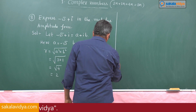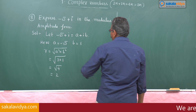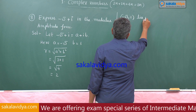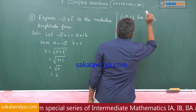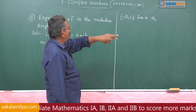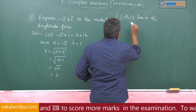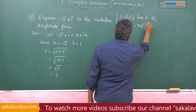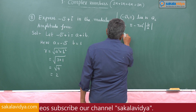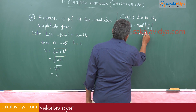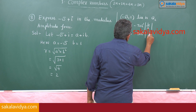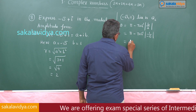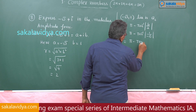For the amplitude: minus root 3 plus i as an ordered pair is (minus root 3, 1), which lies in the second quadrant, between 90 and 180 degrees. Therefore theta equals pi minus tan inverse of the modulus of b by a, which is pi minus tan inverse of 1 by root 3. The modulus of a negative number is positive.